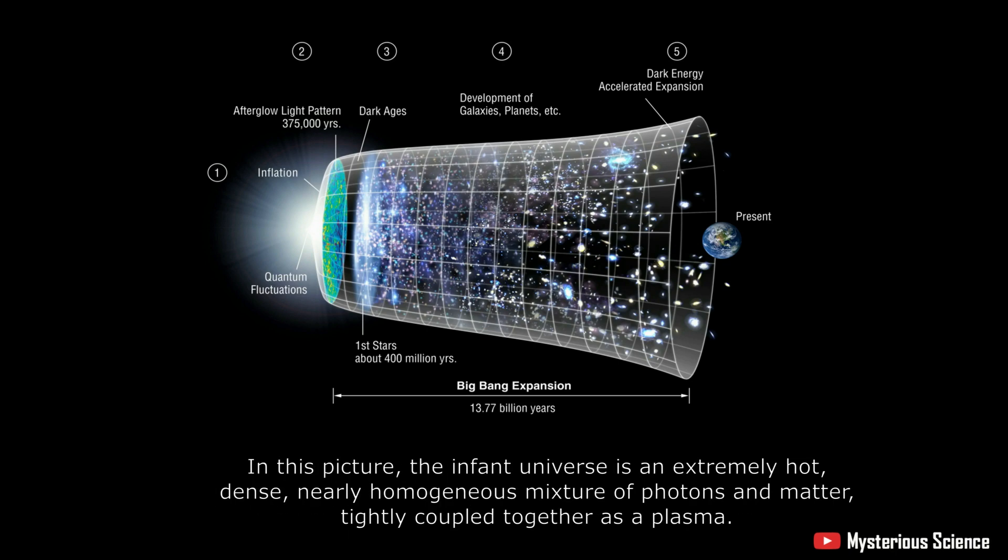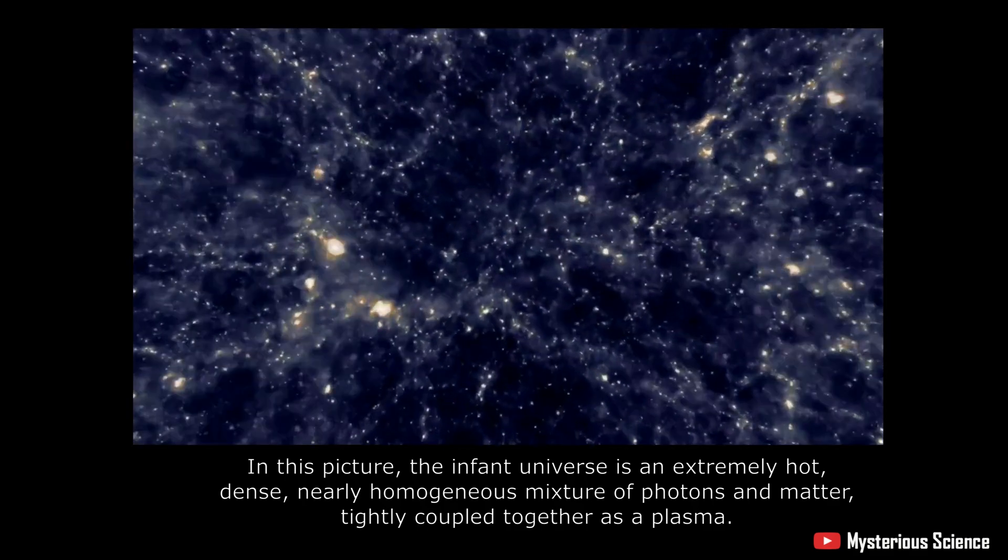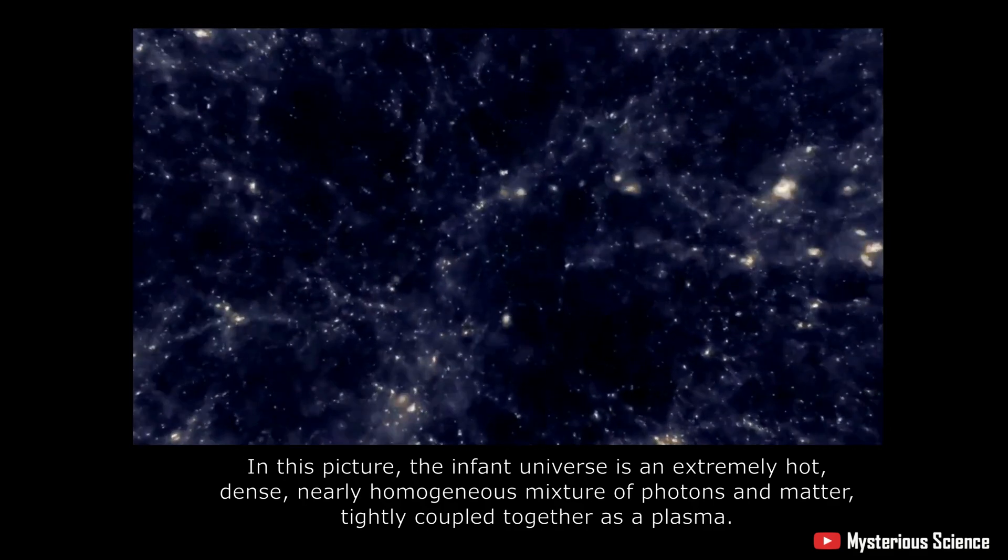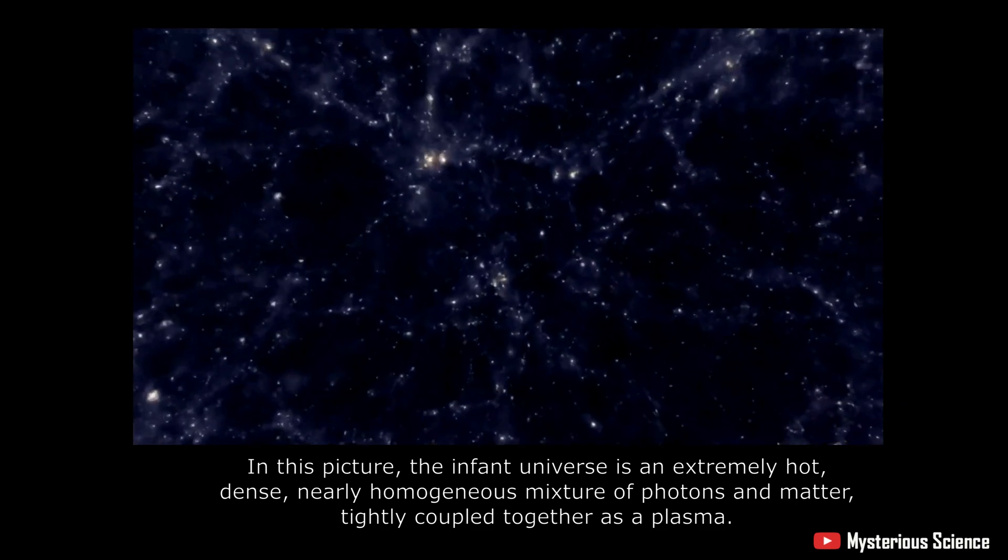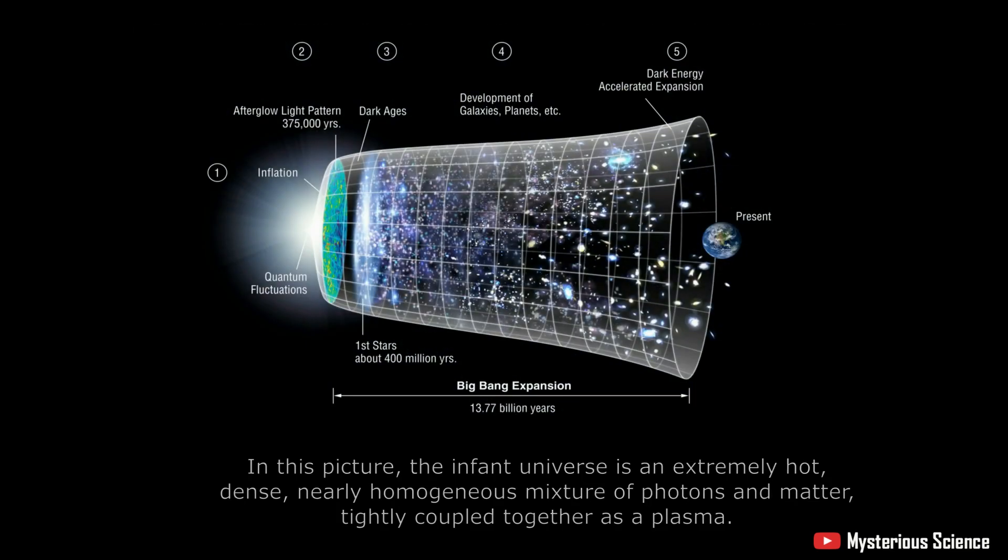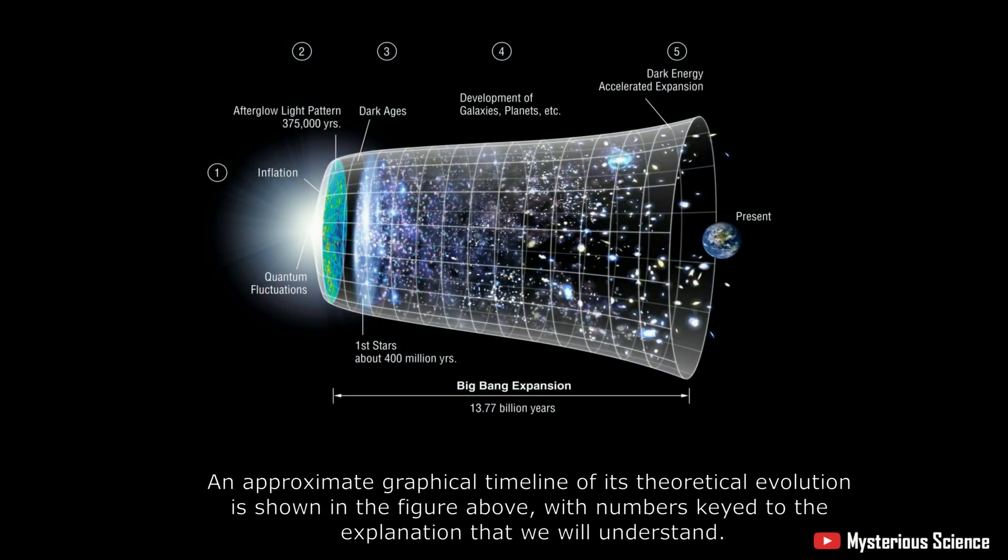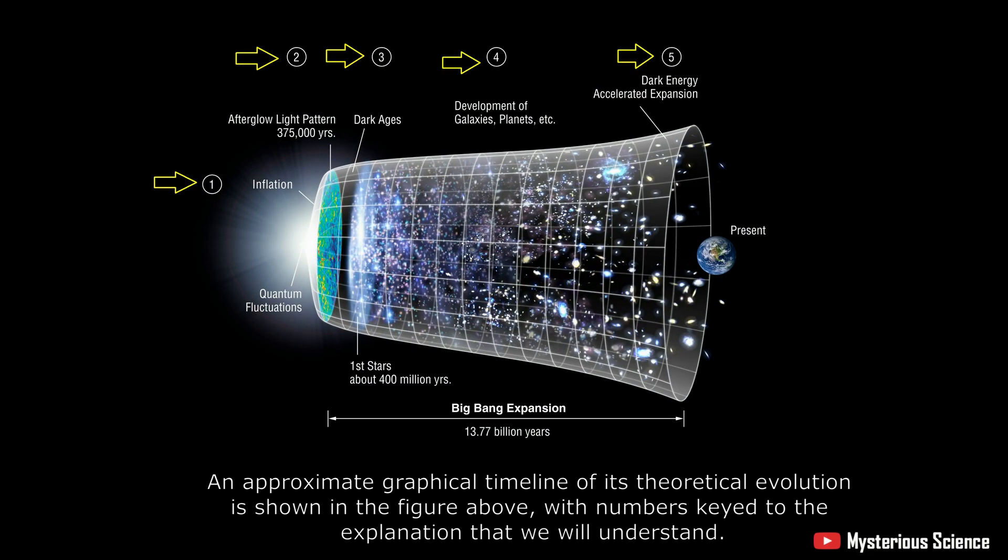In this picture, the infant universe is an extremely hot, dense, nearly homogeneous mixture of photons and matter, tightly coupled together as a plasma. An approximate graphical timeline of its theoretical evolution is shown in the figure above, with numbers keyed to the explanation that we will understand.